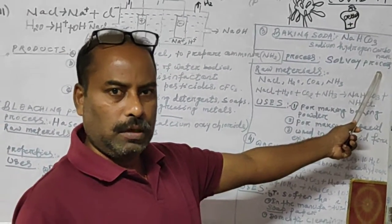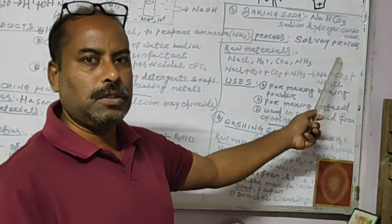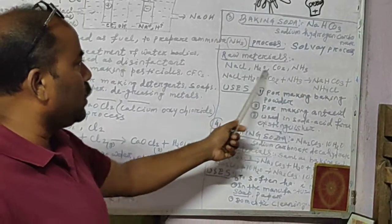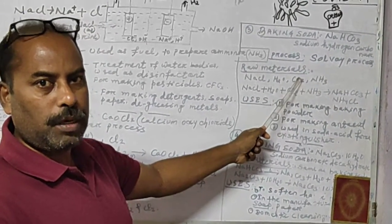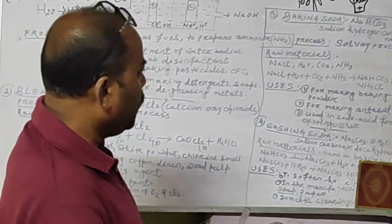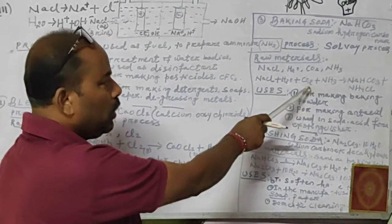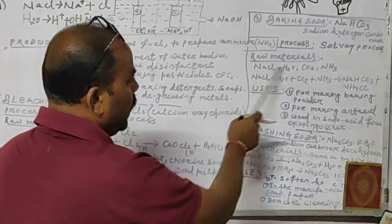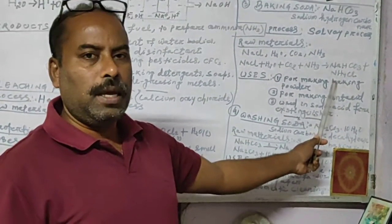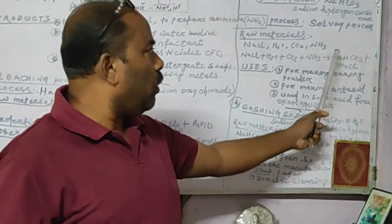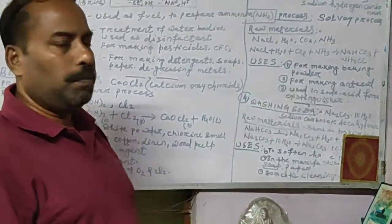Baking soda is prepared by the Solvay process in the Solvay tower. The raw materials are sodium chloride, water, carbon dioxide, and ammonia gas. When these react in the Solvay tower, two products are formed: sodium hydrogen carbonate (NaHCO₃), the main product, and ammonium chloride (NH₄Cl).